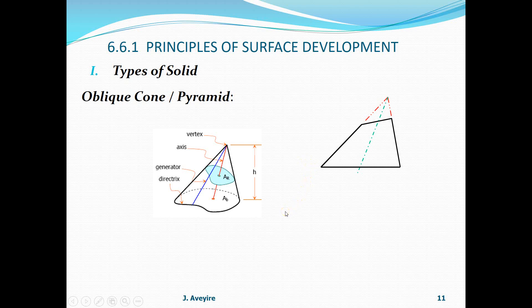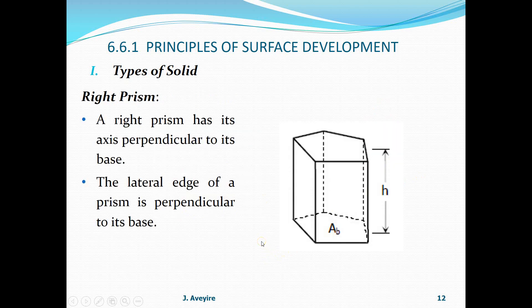Now let's look at an oblique cone or pyramid. The base of it and then the axis of the cone which is inclined to the base, and the height is also inclined. In the drawing, the diameter identified here is different from this over here - this is a circular lower opening. Therefore it is inclined and therefore an oblique cone.